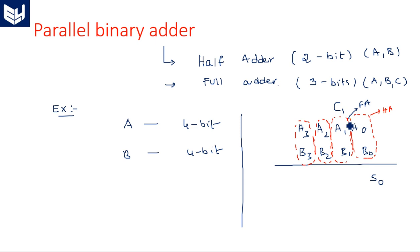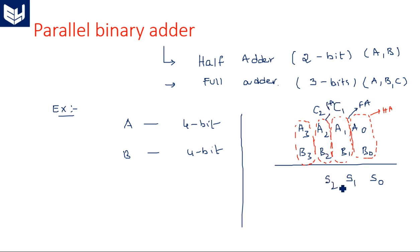The half adder is not suitable because it can only add two bits, whereas the full adder is capable of adding three bits of data. The full adder produces two outputs: sum and carry. The carry is added to the next stage, requiring another full adder, which produces S2 and C3.